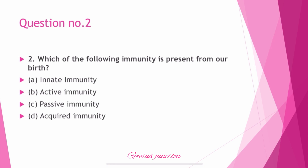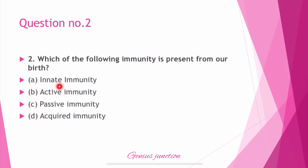Question number 2: Which of the following immunity is present from our birth? Options are: innate immunity, active immunity, passive immunity, and acquired immunity. The right answer is innate immunity. Innate immunity is present in our body from birth.